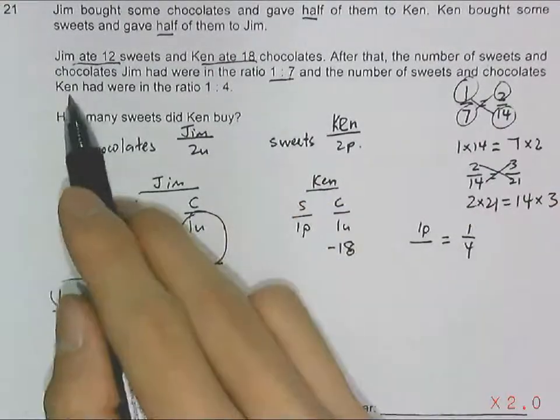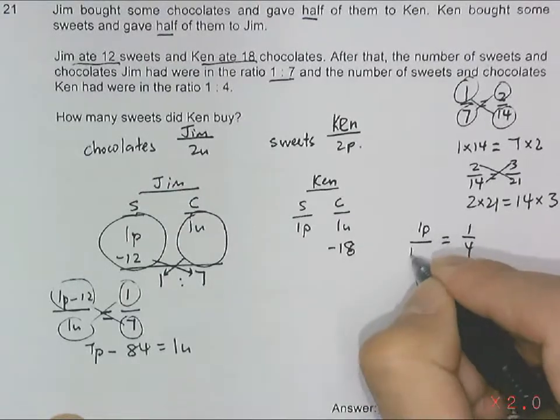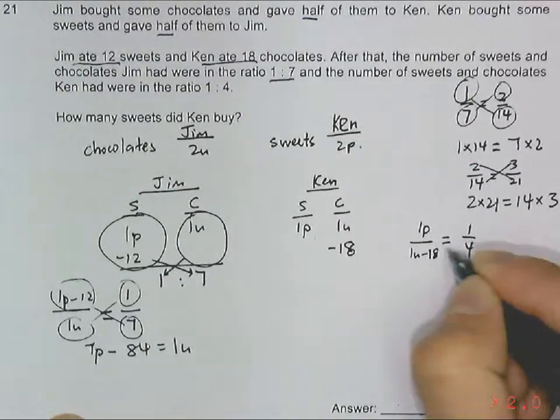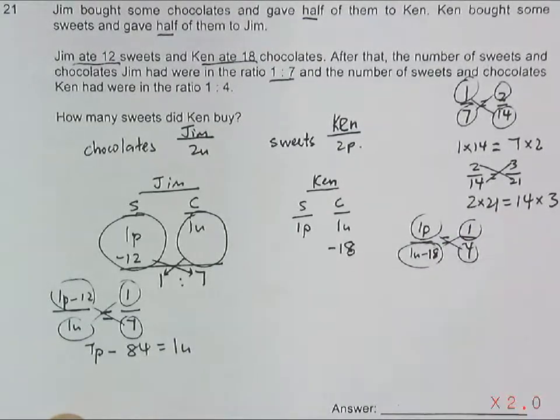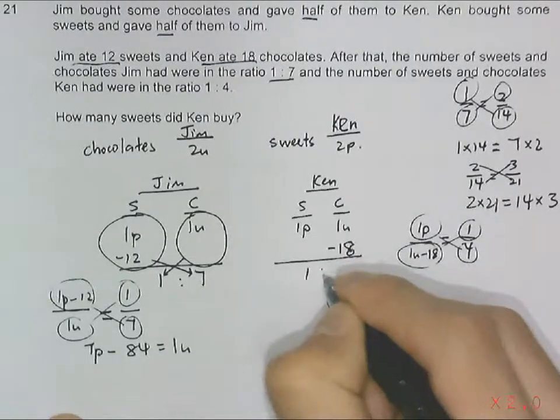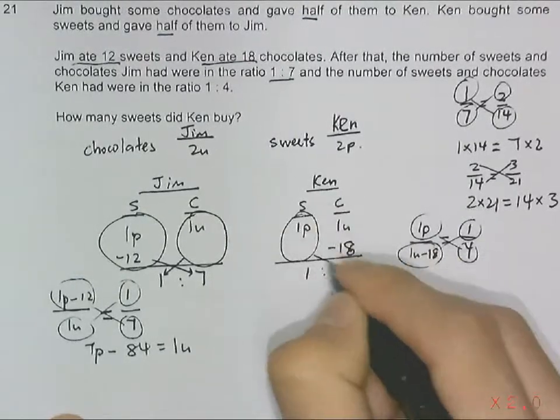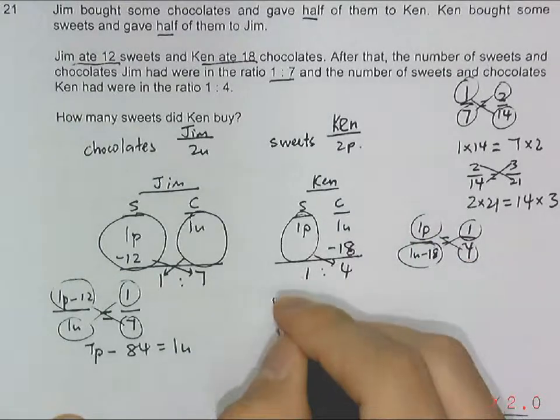The number of chocolates that Ken had in the end becomes 1 unit minus 18. Similar concept - just cross multiply. Circle this times 4, it's 1 part times 4. So I have 4 parts.